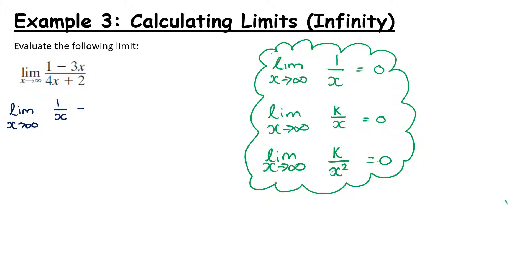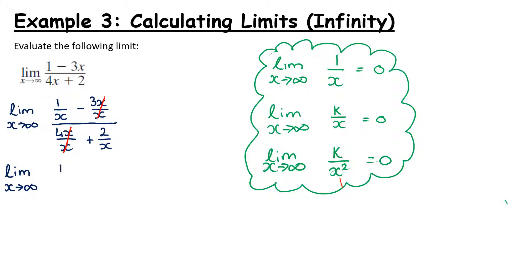So keeping the limit, and dividing everything above and below the line by x — which won't change the fraction — we get 1 over x minus 3x over x, all over 4x over x plus 2 over x. Because every term has been treated the same above and below the line, we haven't changed the value. This simplifies to the limit as x goes to infinity of 1 over x minus 3, all over 4 plus 2 over x.